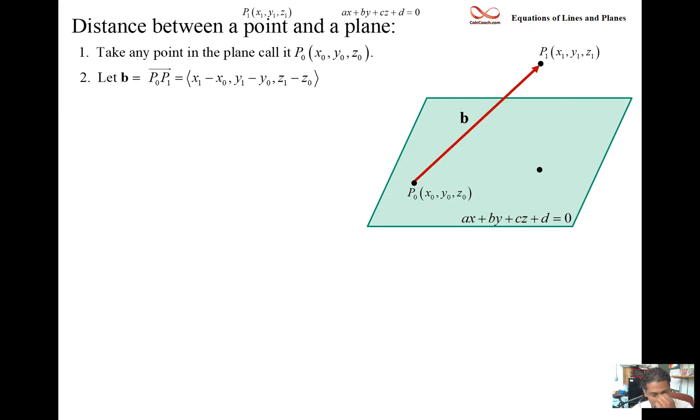Now we have the normal vector to the plane. How can we look at the equation and know what that is? It's the coefficient on x, y, and z—that's the i, j, and k components. So a, b, c is the normal vector.